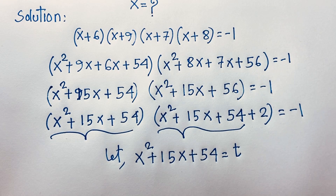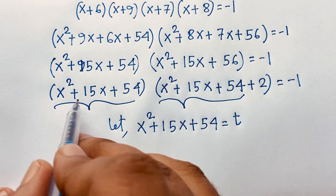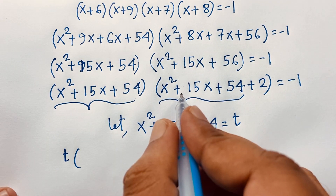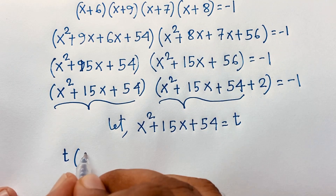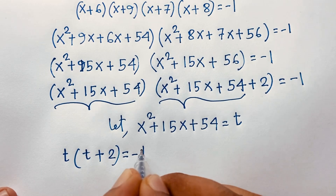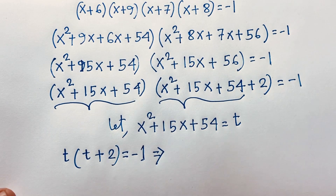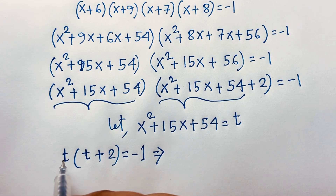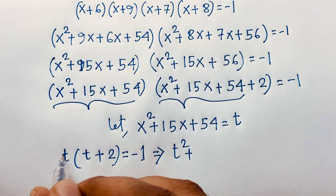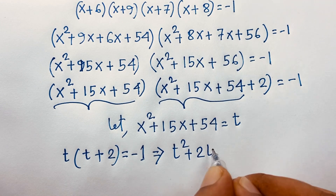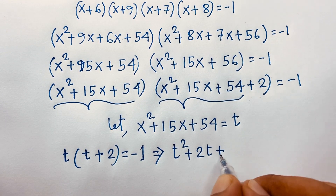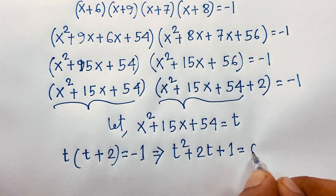Substituting t, the equation becomes t(t + 2) = -1. Expanding: t² + 2t = -1, and moving -1 to the left side gives t² + 2t + 1 = 0.